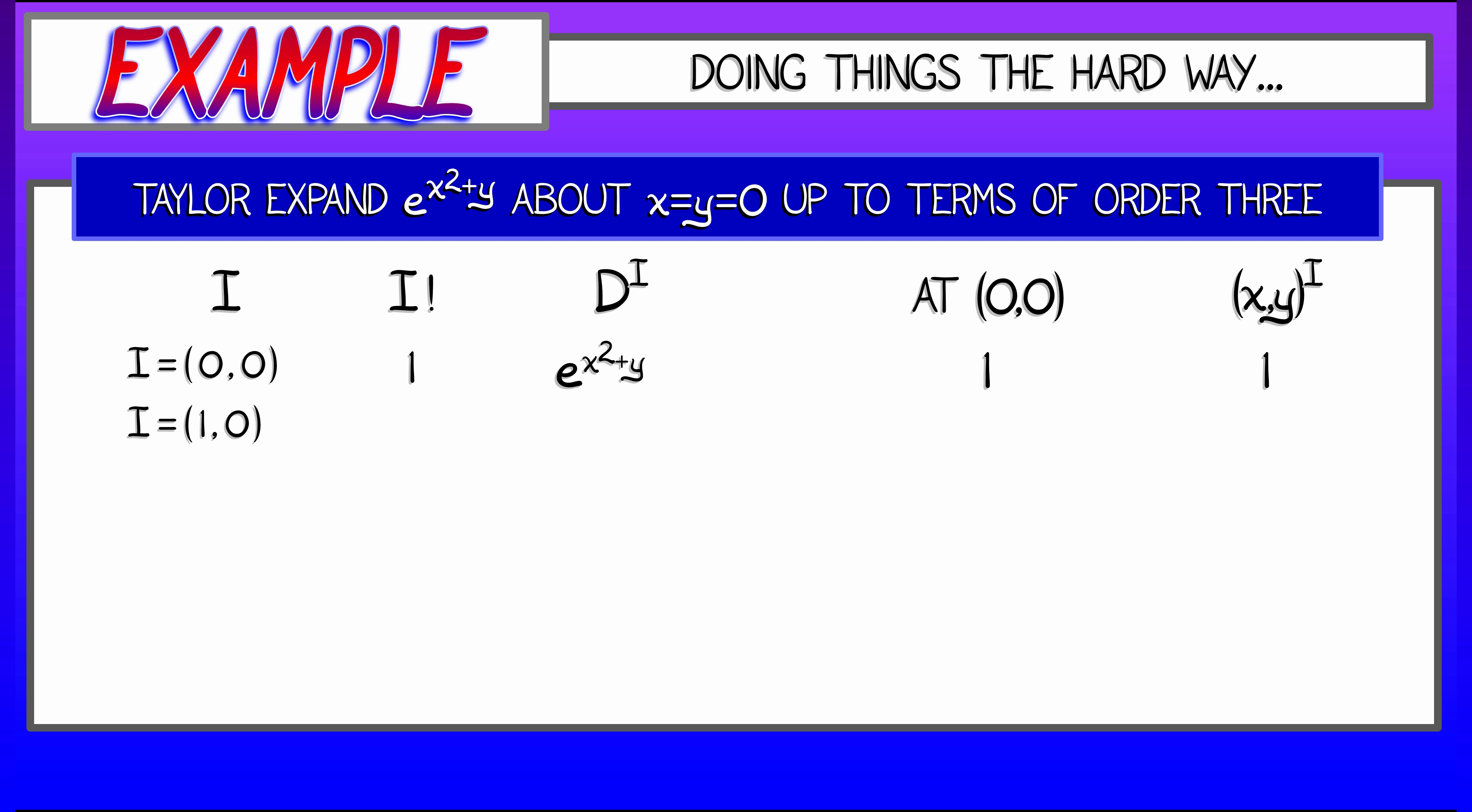Now for the first order terms, let's take first of all the 1,0 term. That means taking the partial of that with respect to x. That's not so bad, right? 2x times e to the x squared plus y. Evaluate that guy at the origin, and I'm going to get 0, right? x is 0. No big deal.